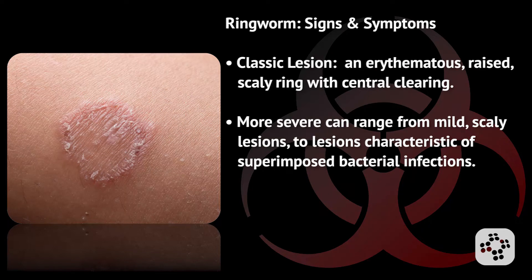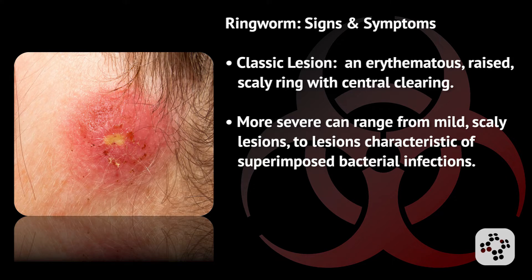There are two different levels most commonly known for the severity of the lesion. A classic lesion is an erythematous raised scaly ring with central clearing. A more severe one can range from mild scaly lesions to lesions that are characteristic of a superimposed bacterial infection.